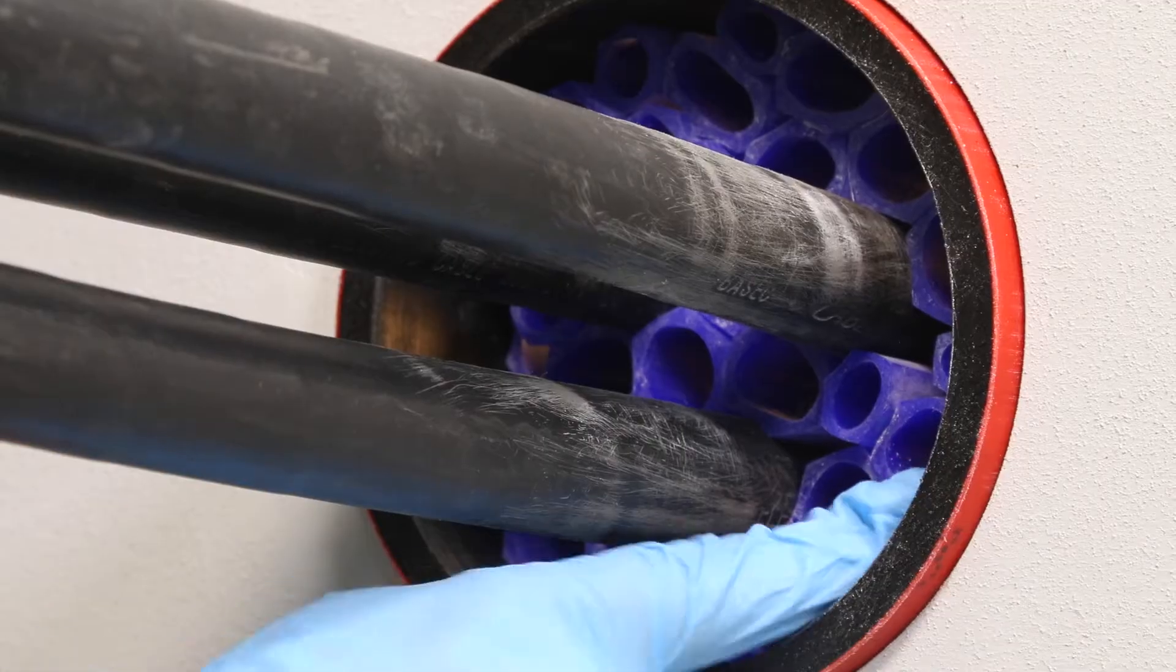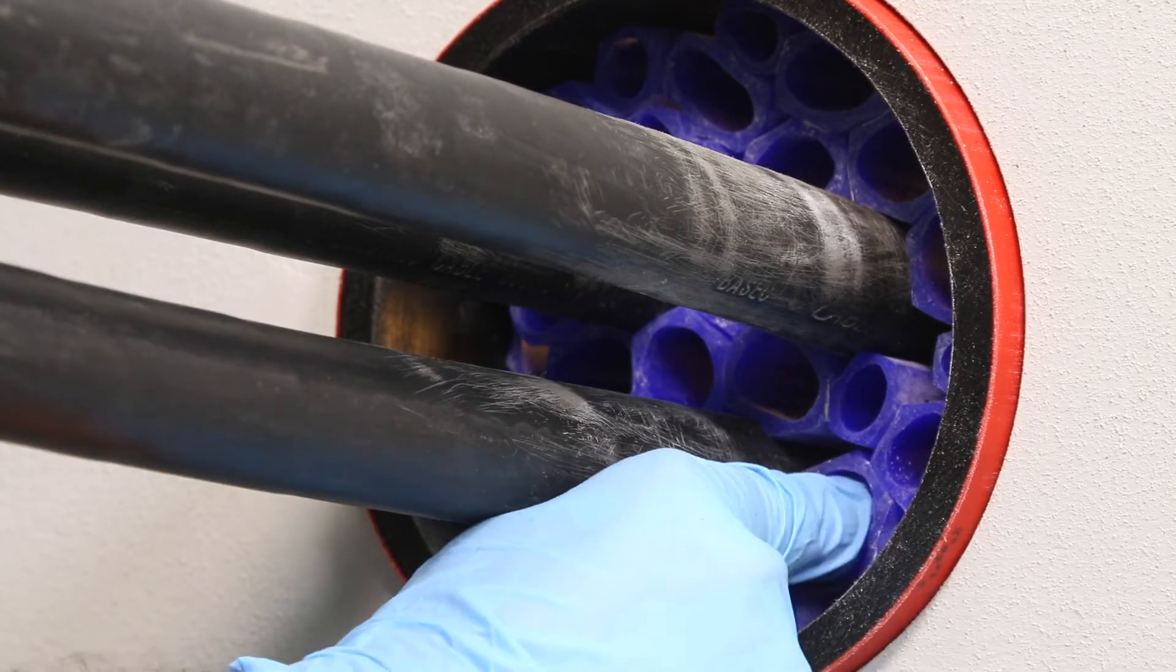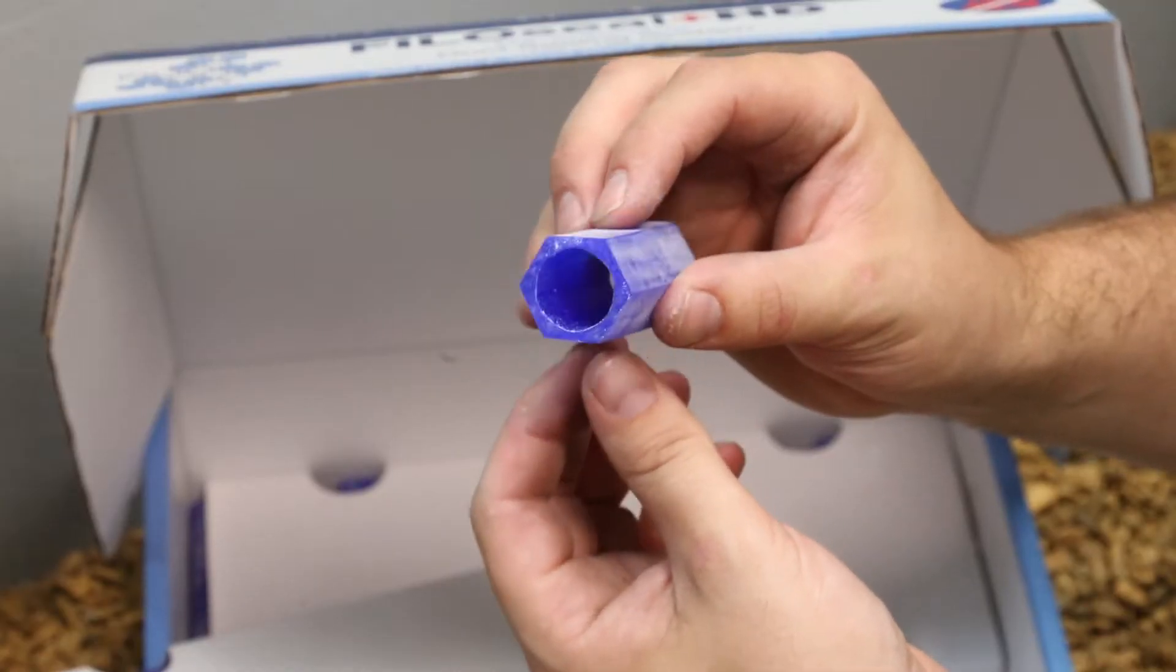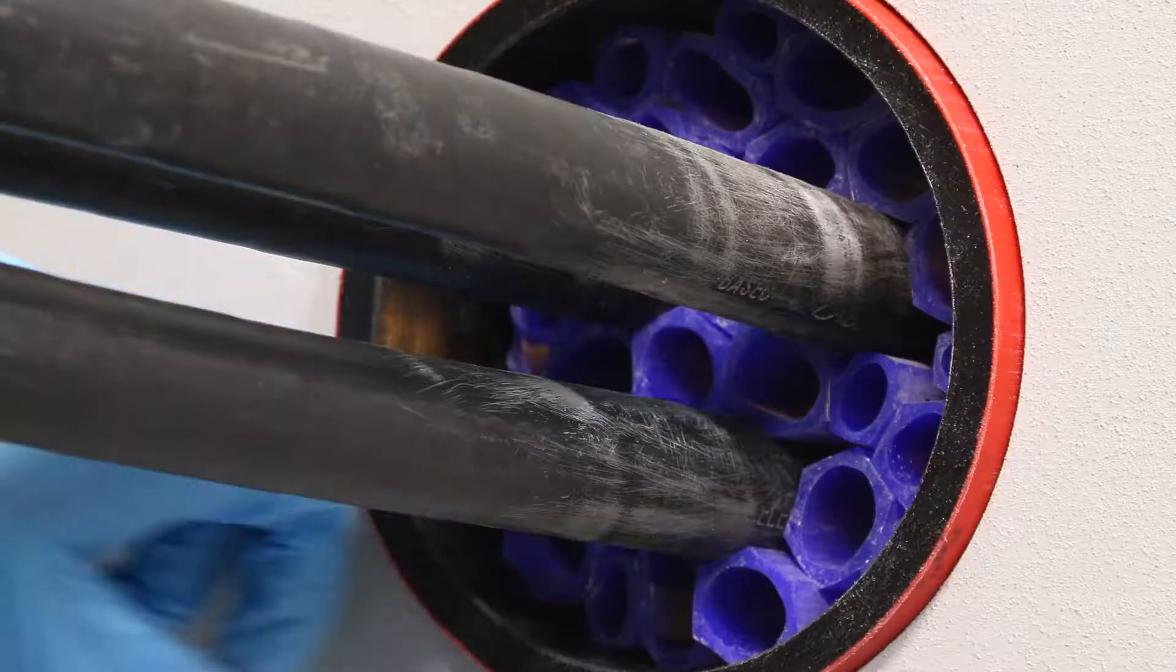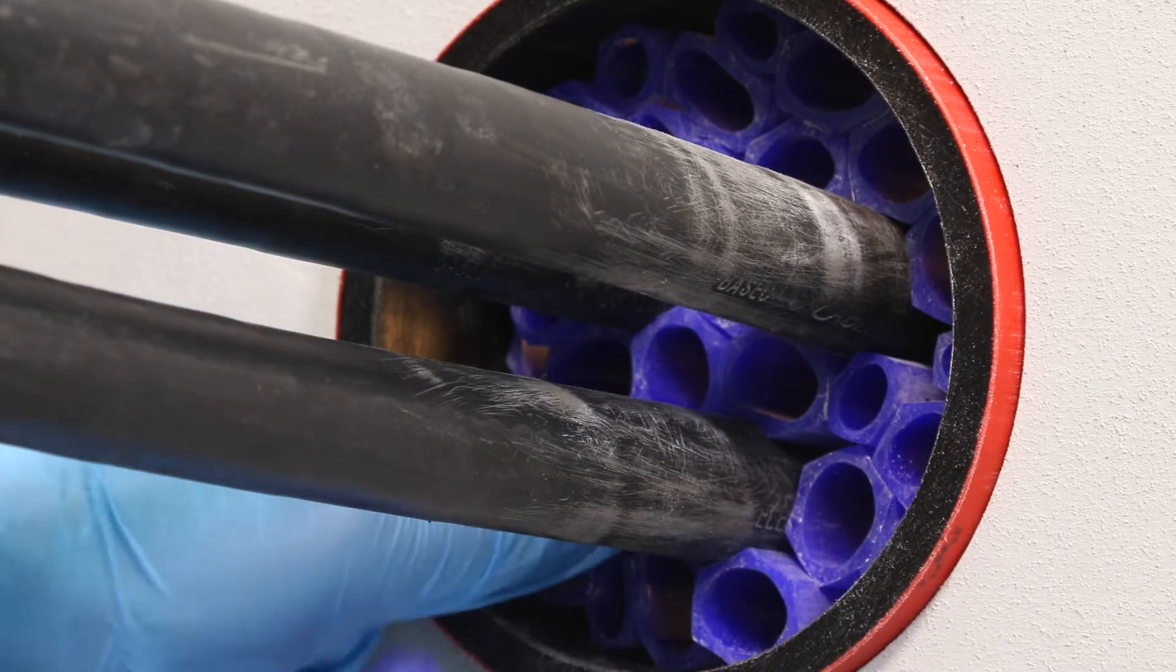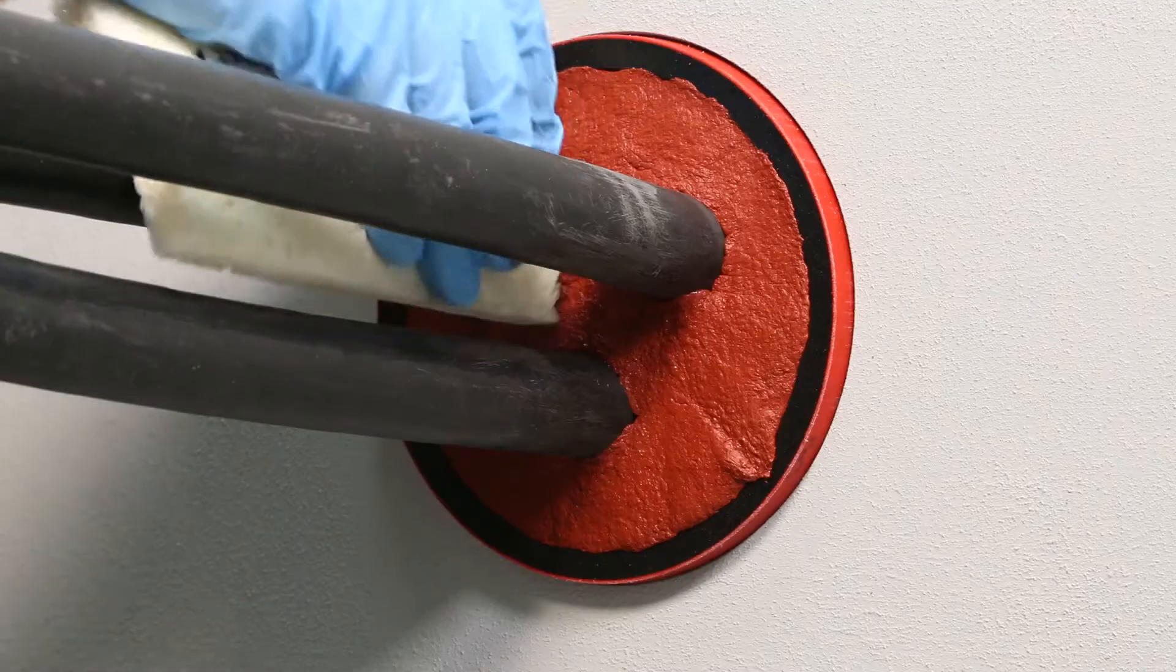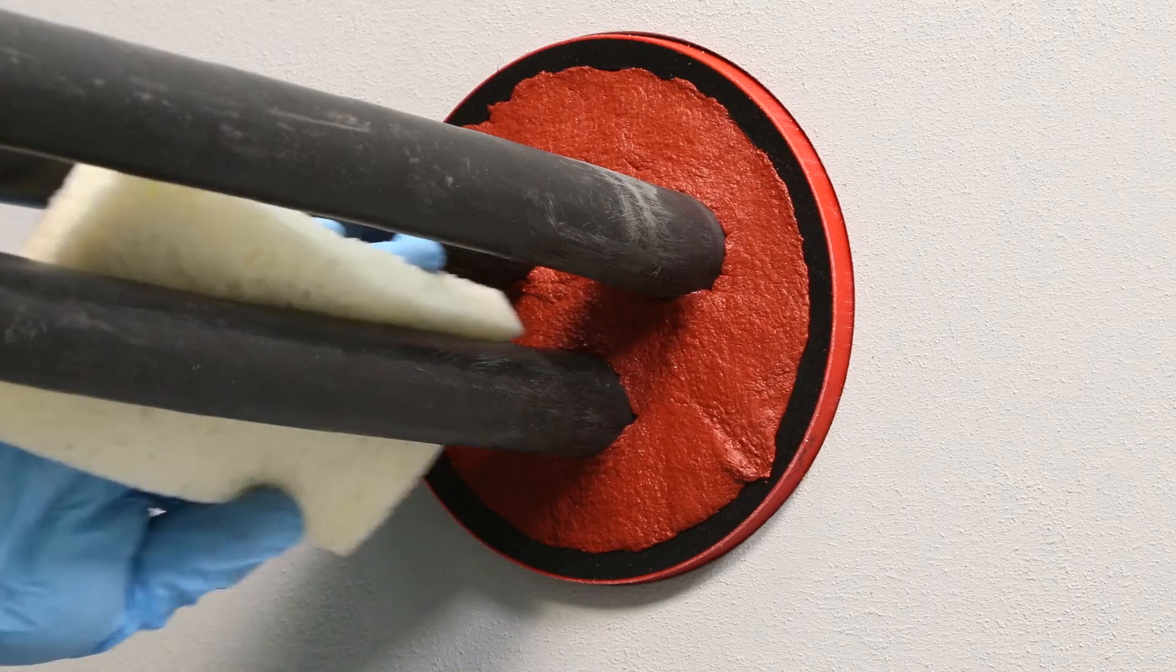The system is quick and easy to install using the hexagonal shaped tubes to build into the back of the duct around the cables, giving excellent mechanical strength to the seal, which is then topped off using our specially formulated MD Plus sealant.